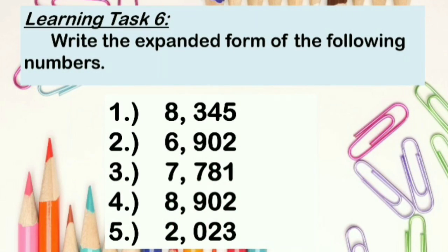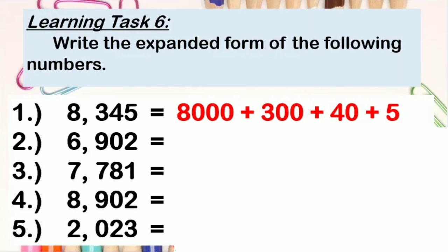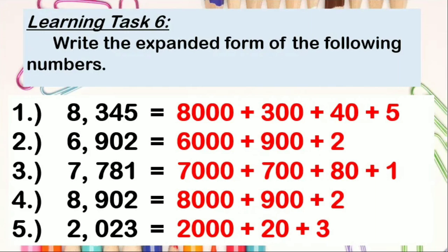Continuing with Learning Task 6. Write the expanded form of the following numbers. 8,000 plus 300 plus 40 plus 5. 6,000 plus 900 plus 2. 7,000 plus 700 plus 80 plus 1. 8,000 plus 900 plus 2. And 2,000 plus 20 plus 3. You're making it right!